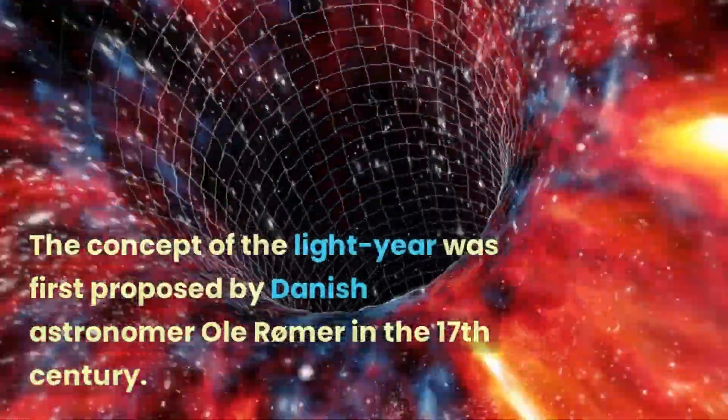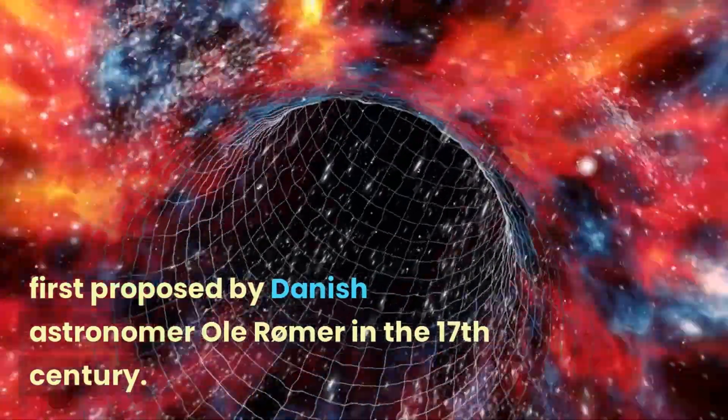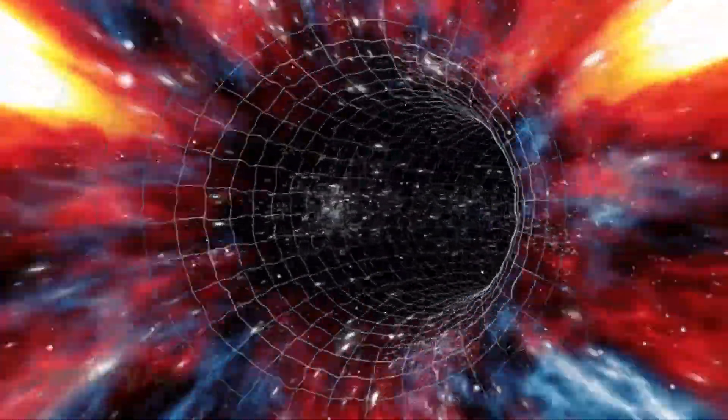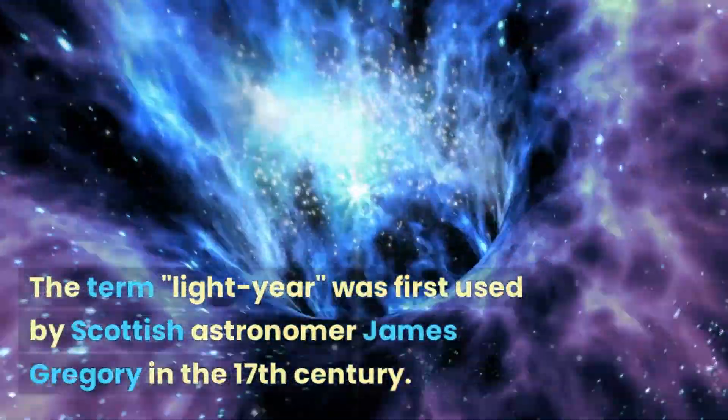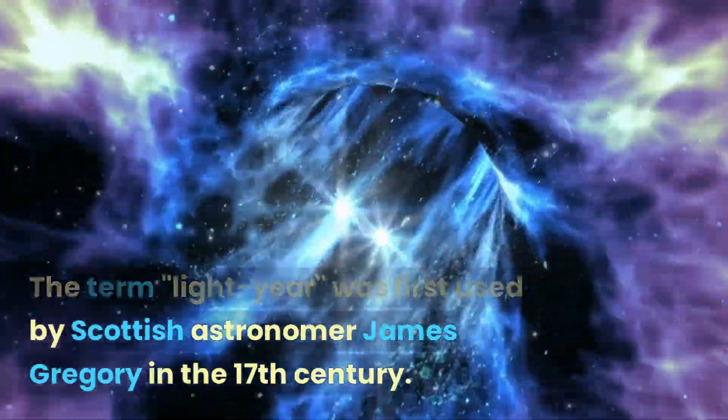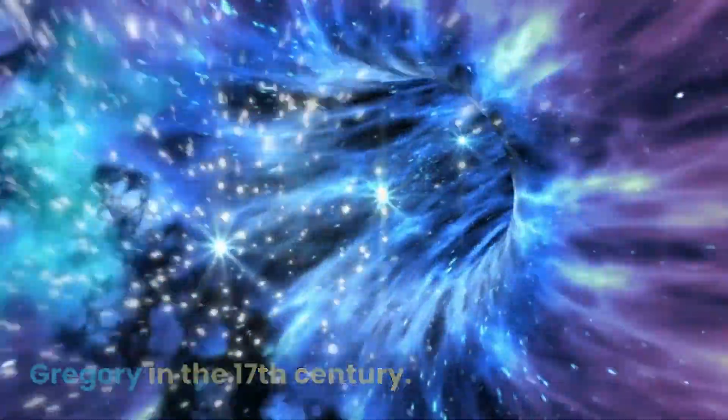The concept of the light year was first proposed by Danish astronomer Ole Romer in the 17th century. The term 'light year' was first used by Scottish astronomer James Gregory in the 17th century.